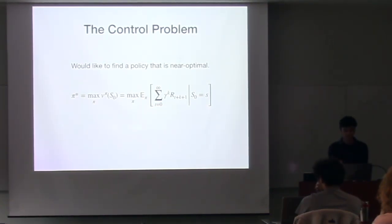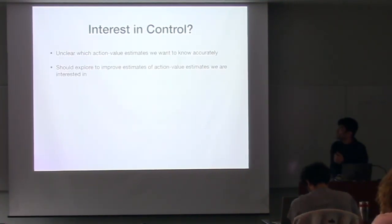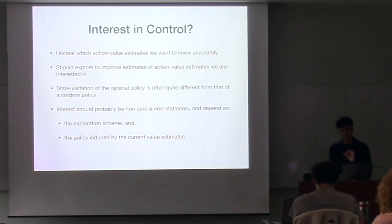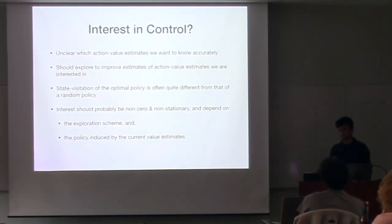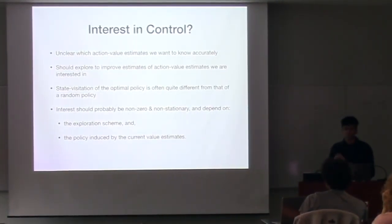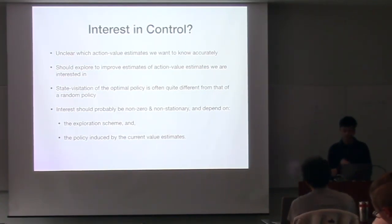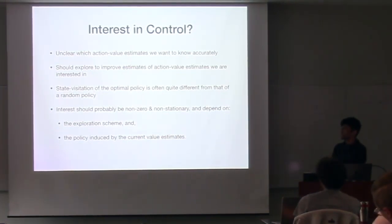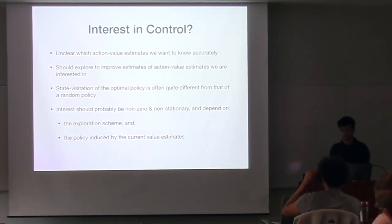Now I'll briefly talk about the control problem. In the control problem, we're trying to maximize the value of the start state, or basically the expected return that we get. In control, it becomes a lot more intricate to think about interest. First, it's unclear exactly how we should think about how we want our action value estimates to be accurate. Particularly because if you have an exploration policy while we explore, we don't really care about particular action value estimates because we're not using them. Whereas when you exploit, you're going to start beginning to use your action value estimates. So it's intricately related to your exploration policy. Also, the optimal policy has a state visitation frequency that's quite different from a random policy, so we have to account for the fact that state visitation also changes quite a bit as we think about control.